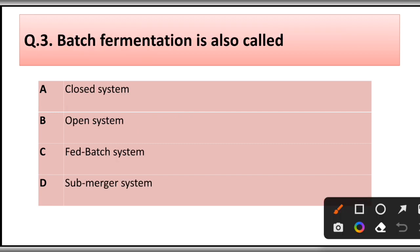Question number three: Batch fermentation is also called: A) closed system, B) open system, C) fed batch system, D) submerged system. The correct answer is option A, closed system.